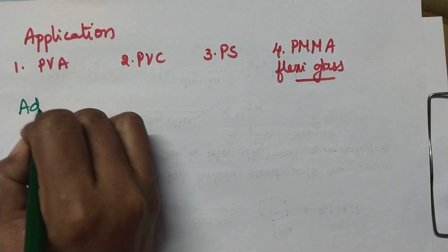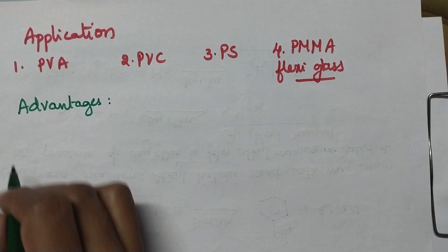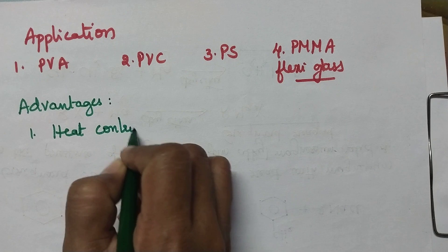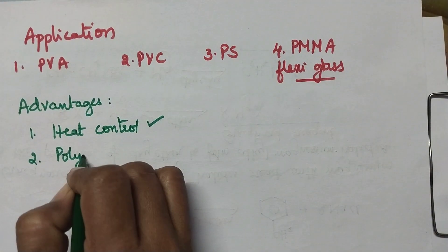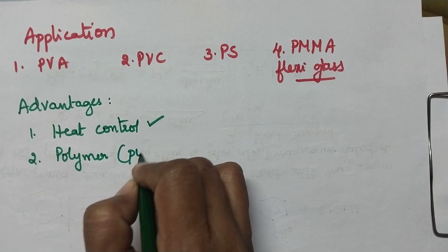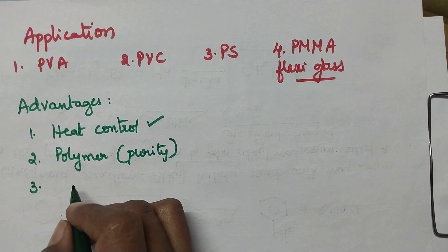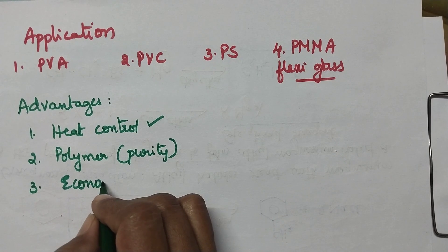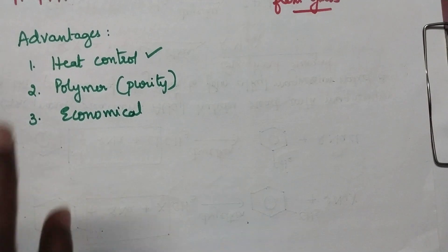Coming to the advantages of suspension polymerization: heat control is possible through this technique. The polymer is obtained with high levels of purity. At the same time, this technique is economical. These are the advantages of suspension polymerization.